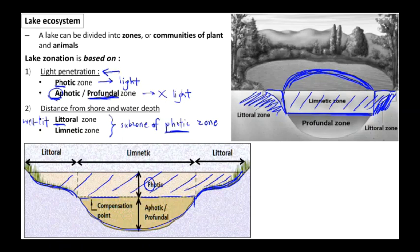Over here, you can see this that we call the compensation point. What is a compensation point? Compensation point is a point where the rate of photosynthesis is the same as the rate of respiration.